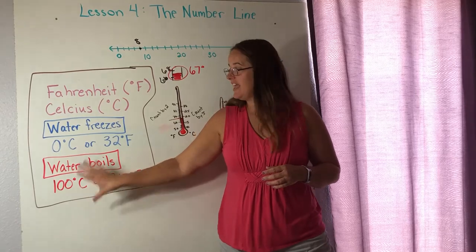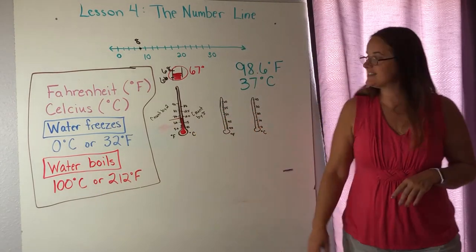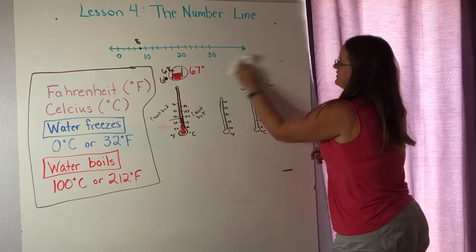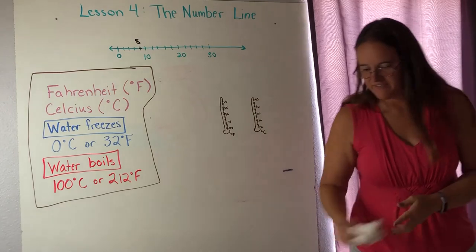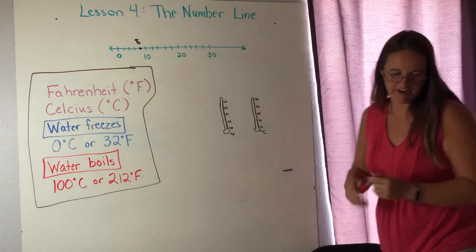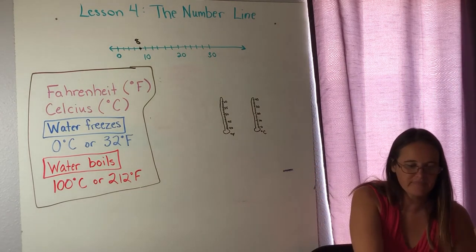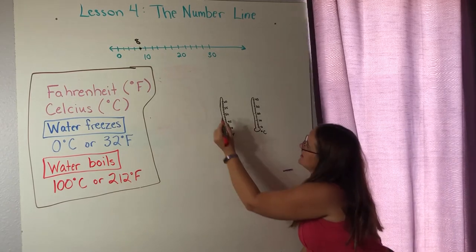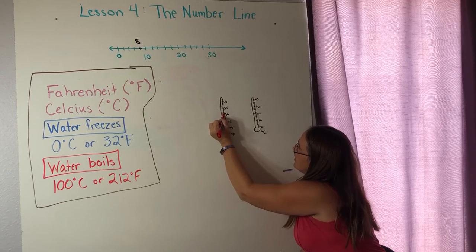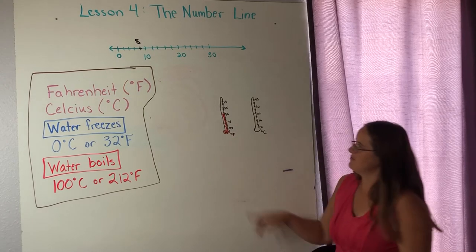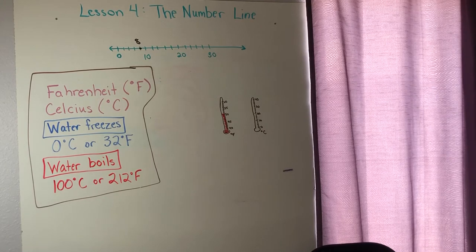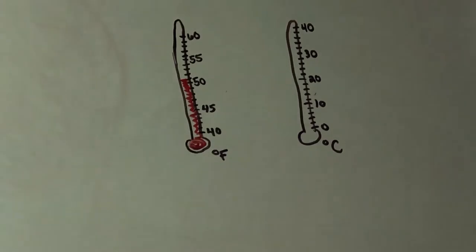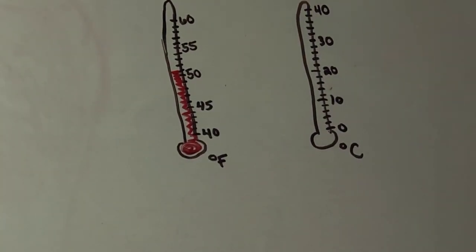All right so last thing like I said if you would like to pause the video make sure you get this in your math dictionary that's a great first start and then we're going to move on with some practice with our thermometers. So let me get rid of a little bit of this so that it's not so distracting. I have two thermometers here. I have a Fahrenheit thermometer and a Celsius thermometer. We're going to start with Fahrenheit and let's see I am going to ask Riker what is the temperature of my thermometer here.